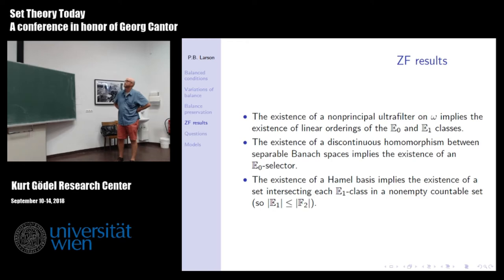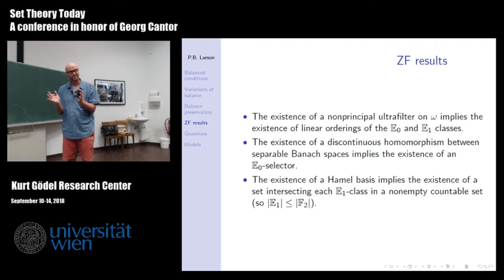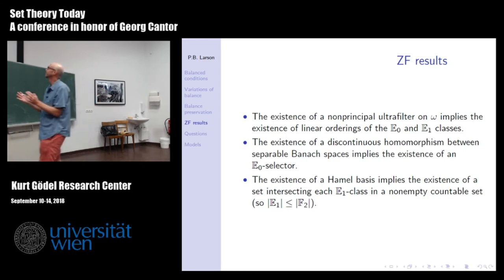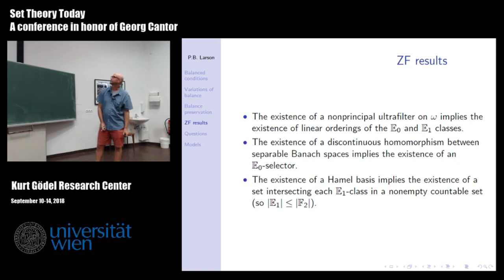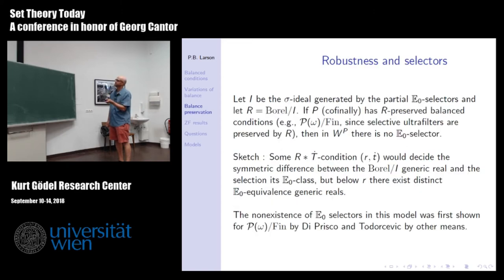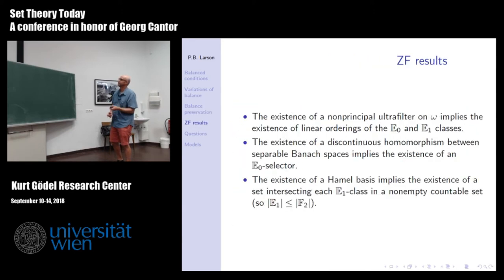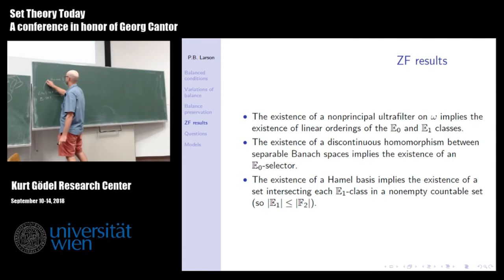Linearly ordering E₀ classes: it turns out if you add an ultrafilter, you linearly order the E₀ classes. It's hyperfinite — if you have an equivalence relation with finite classes, you can linearly order the classes by taking the least member of each. If you have an ultrafilter, you can use it to sew together those linear orderings into a linear ordering of the E₀ classes. Going from finite to E₀ to E₁, you can linearly order the E₁ classes using an ultrafilter. The second ZF result: trying to push the argument for no E₀ selector in the ultrafilter model led to the observation that a discontinuous homomorphism between separable Lebesgue spaces does imply the existence of an E₀ selector. So that implication holds, which means the E₀ direction doesn't go that way.